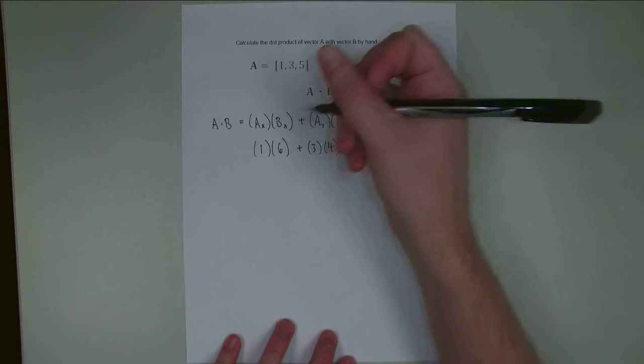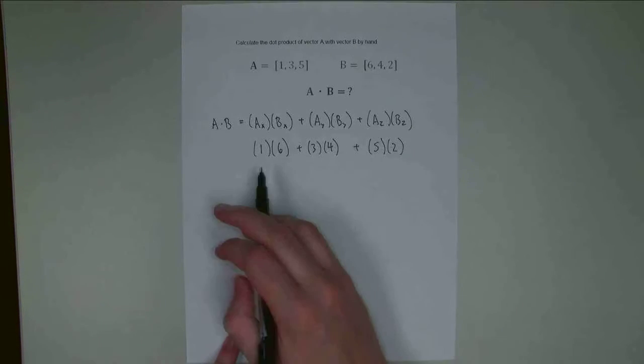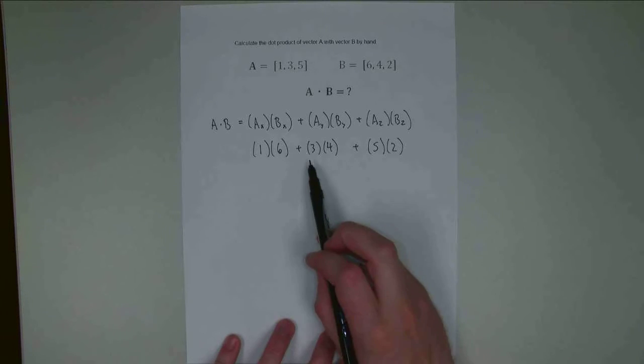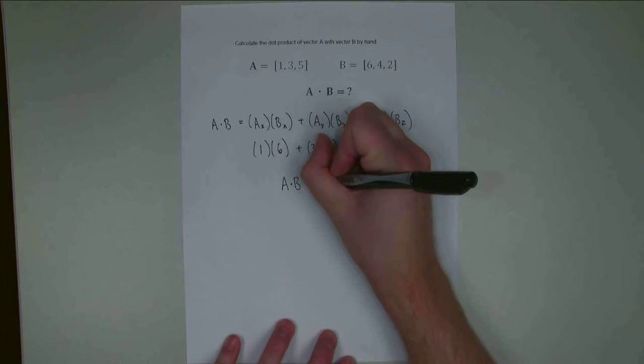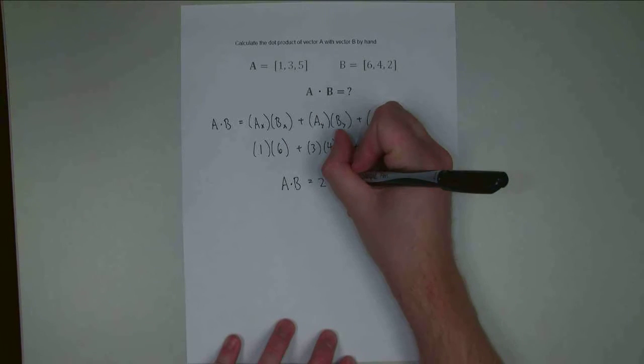So if I simply multiply 1 times 6, 3 times 4, 5 times 2, and add all those numbers together, I can get A dot B is going to be 28.